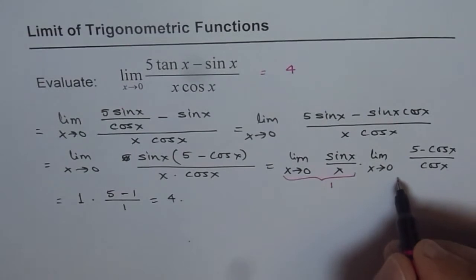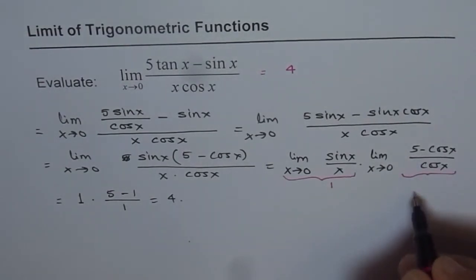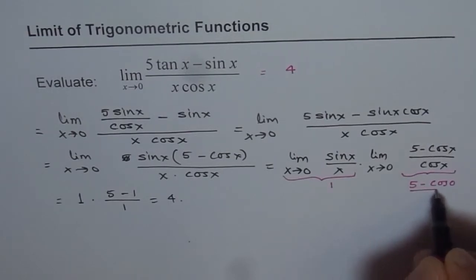You can see here. So this part is 1. And as far as this part goes, (5 - cos 0) over cos 0. Now cos 0 is 1.